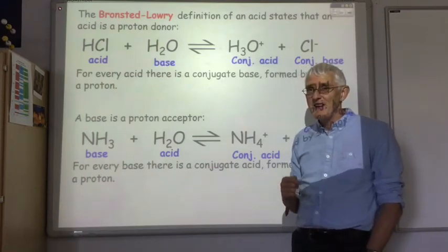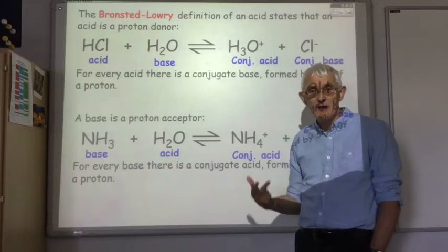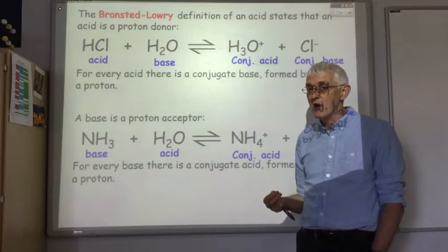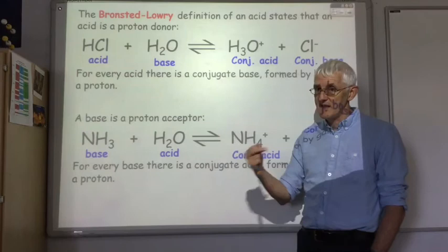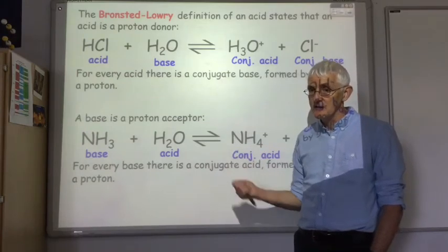So you can't just learn that such and such a thing is an acid, such and such a thing is a base. You have to look at the individual equation and work out what's donating the proton, that'll be the acid, what's accepting the proton, that'll be the base. Then work out the conjugate acid and the conjugate base.